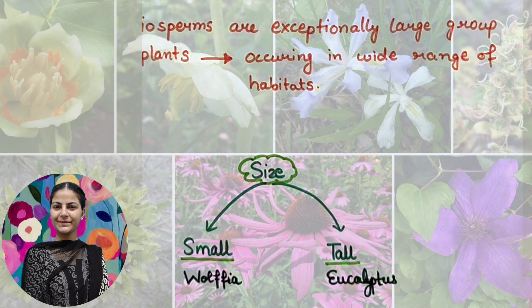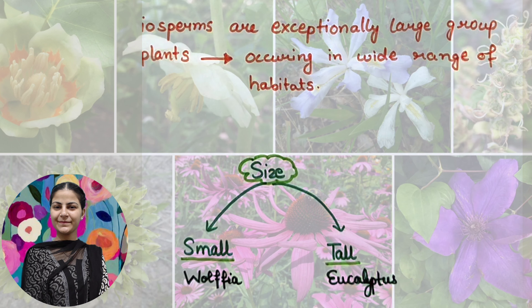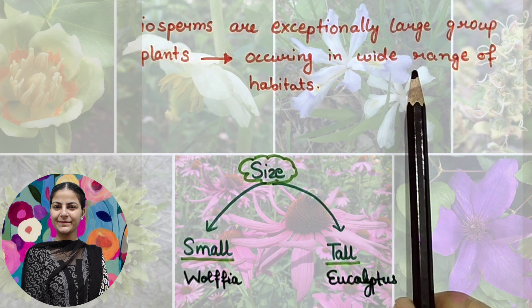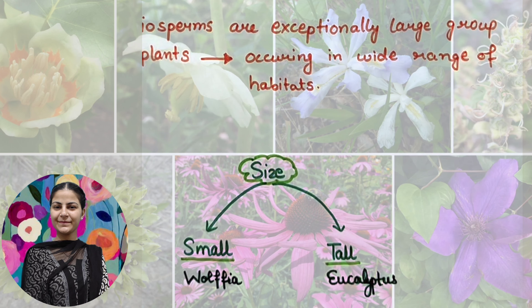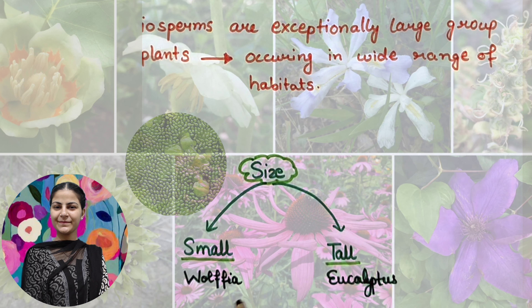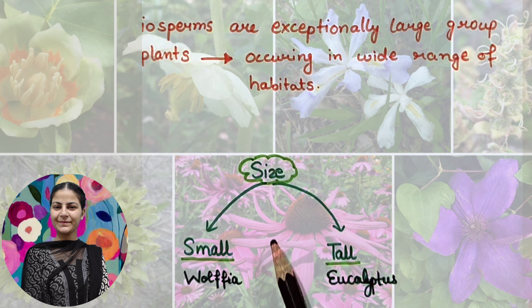Angiosperms are not limited to just Punjab's normal climate — they also grow at hill stations. There is a wide range of habitats and sizes. The smallest example is Wolffia, and the tallest is the eucalyptus tree.